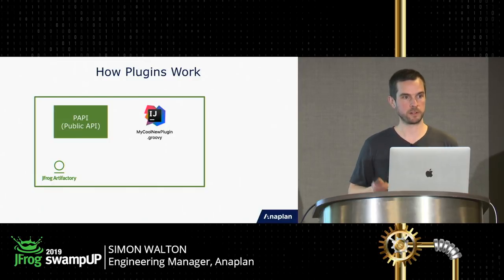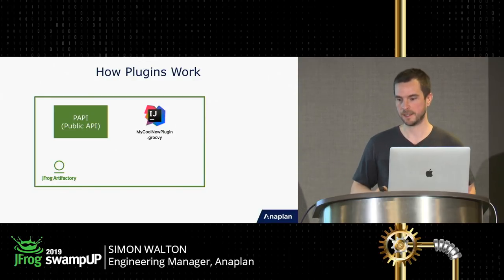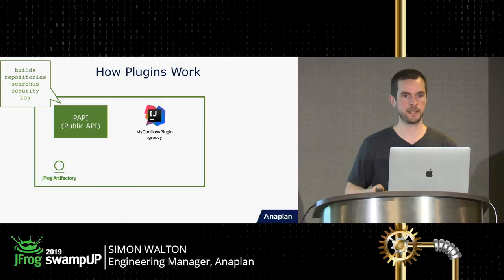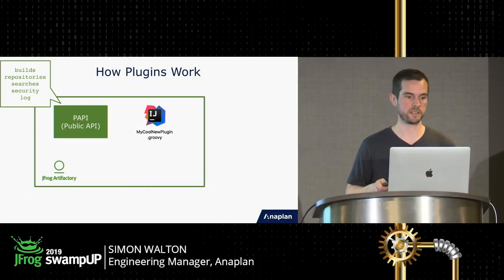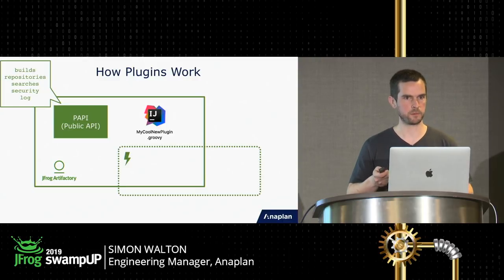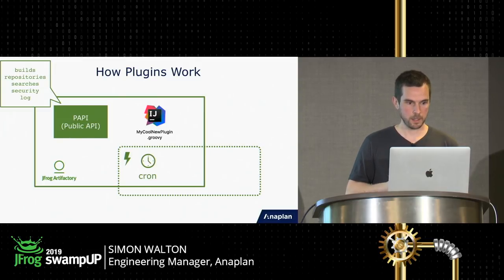When you write a plugin for Artifactory you'll be using the public API, which despite the name is kind of like a private API — it sits at the heart of Artifactory and allows you to interact with its internals. You'll open up a DSL block, inside that DSL you'll open a closure and write some Groovy expressing how to interact with Artifactory. You can do things like `builds.getBuild`, `repositories.getRepository`, look at security information, and so on — so you don't have to call the public REST endpoint, which would be long-winded.